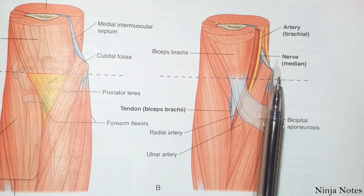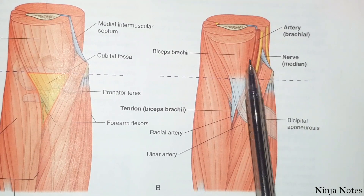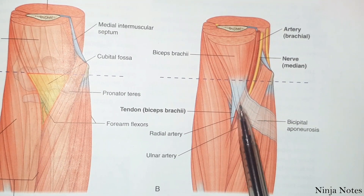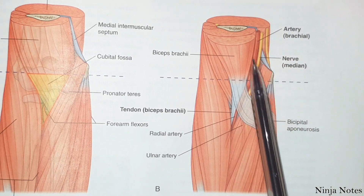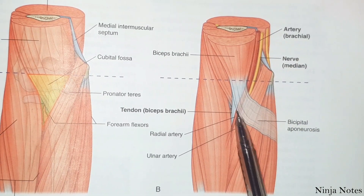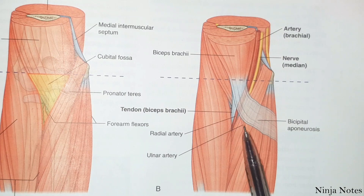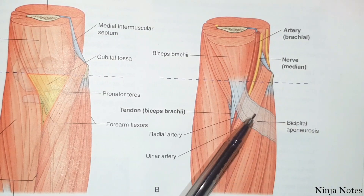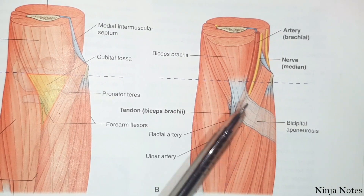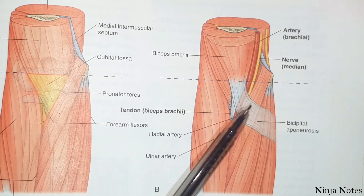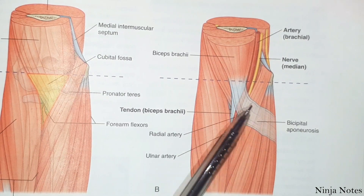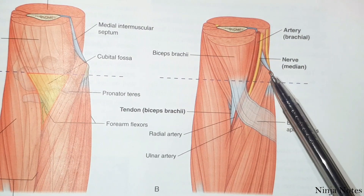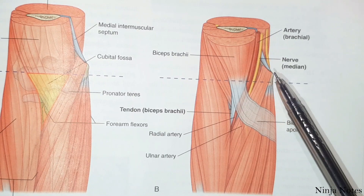Here we can see the contents of this cubital fossa. We have the biceps brachii muscle, and the tendon of the biceps brachii muscle is going through the cubital fossa. The brachial artery is coming and bifurcating into the radial artery and the ulnar artery. The median nerve is also passing through this. Here we have the bicipital aponeurosis, which forms the roof. The ulnar nerve is passing posterior to the medial epicondyle of the humerus bone.